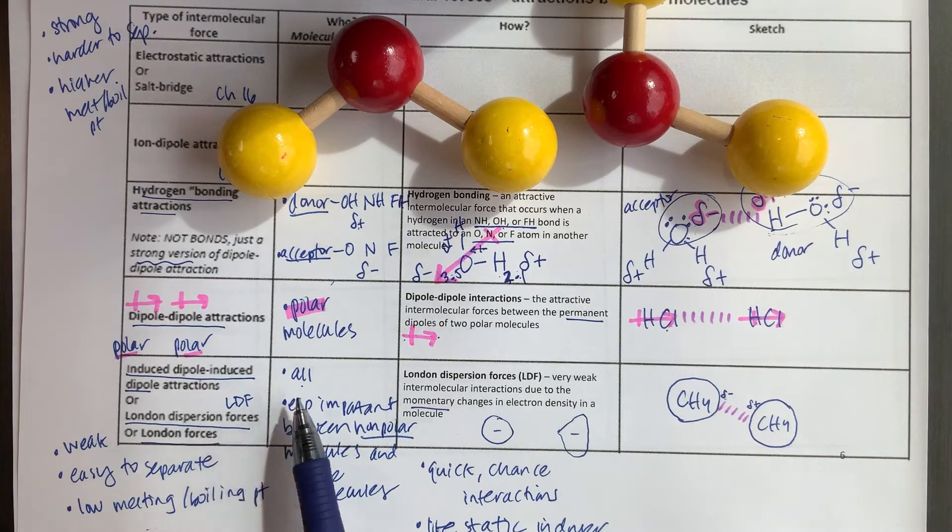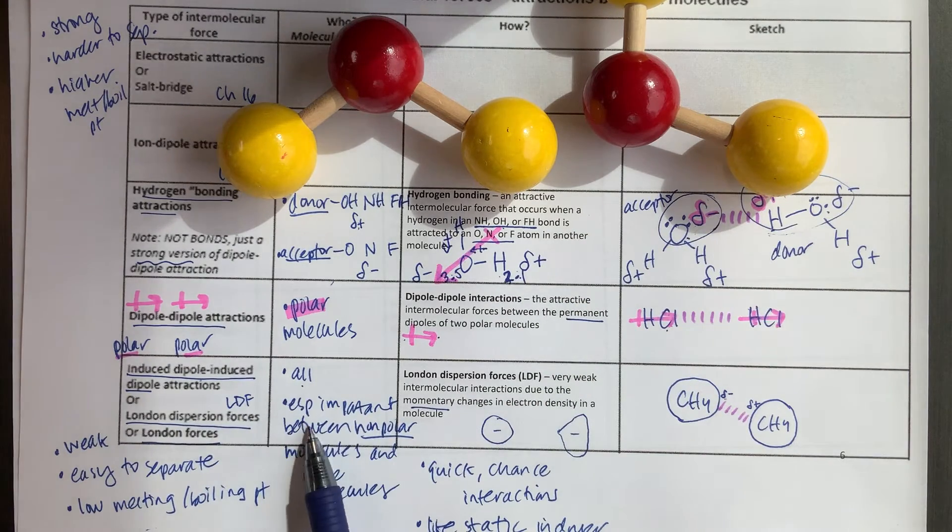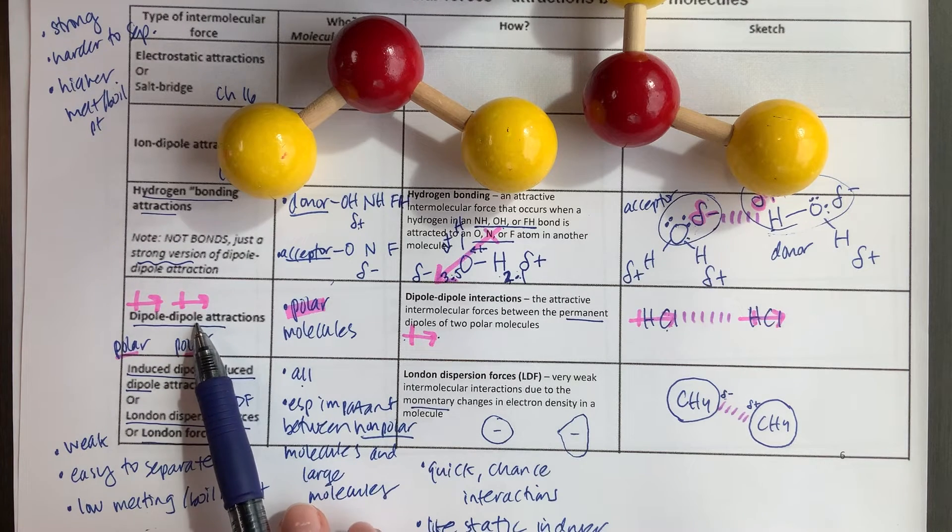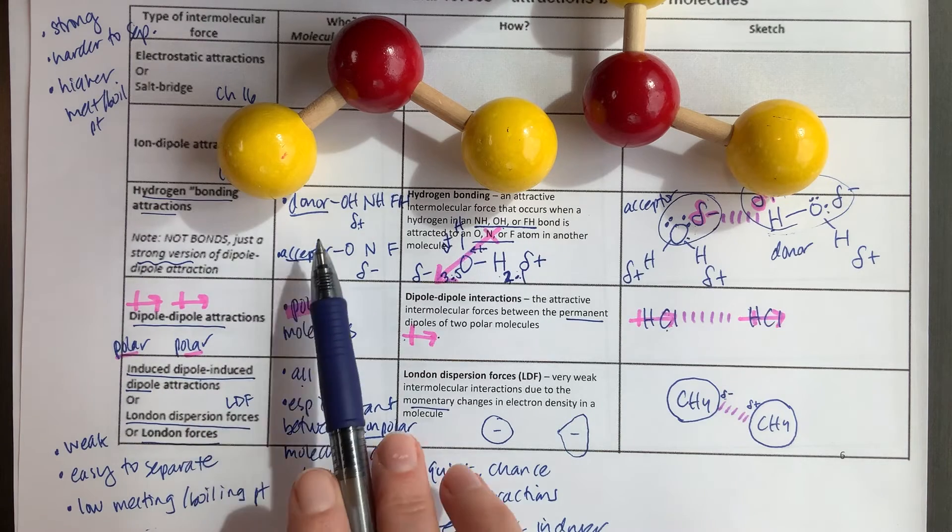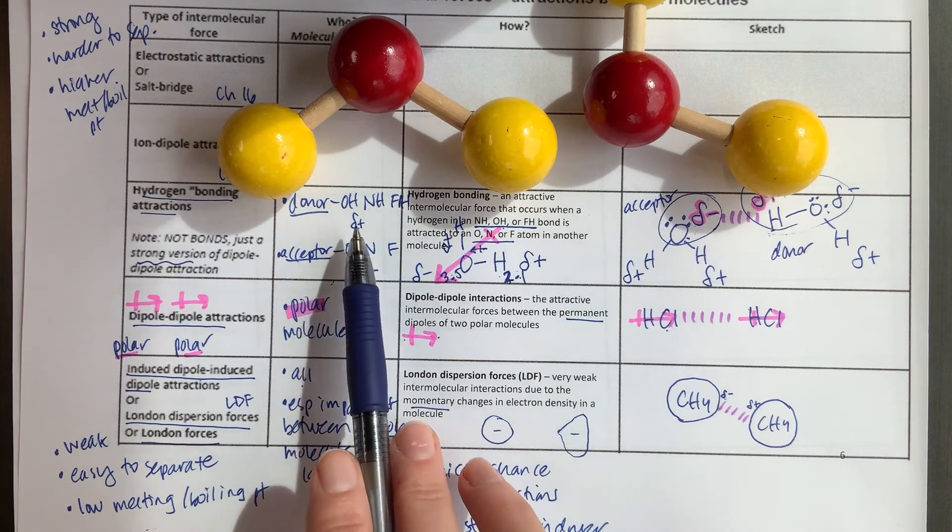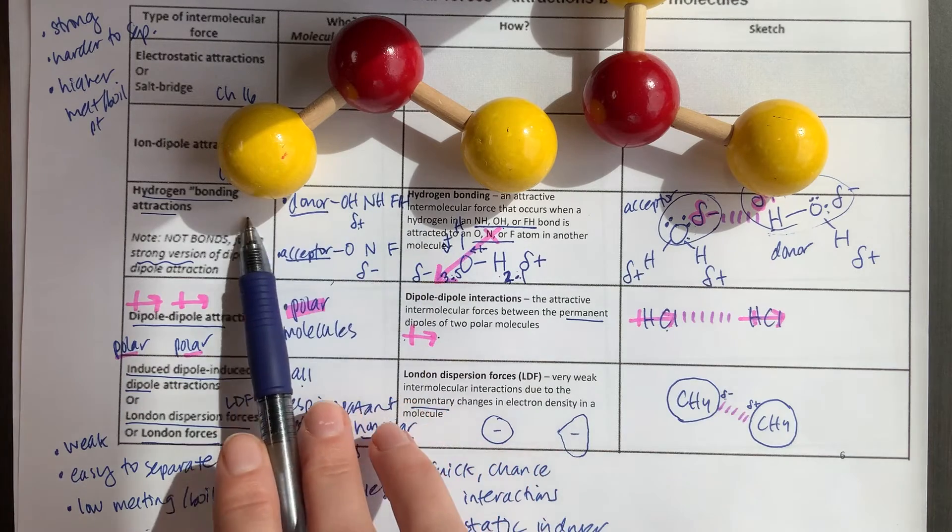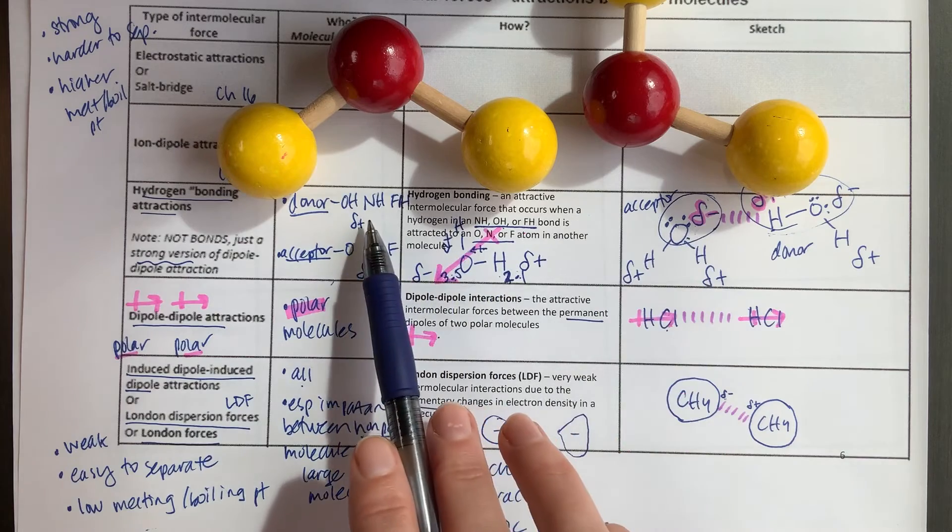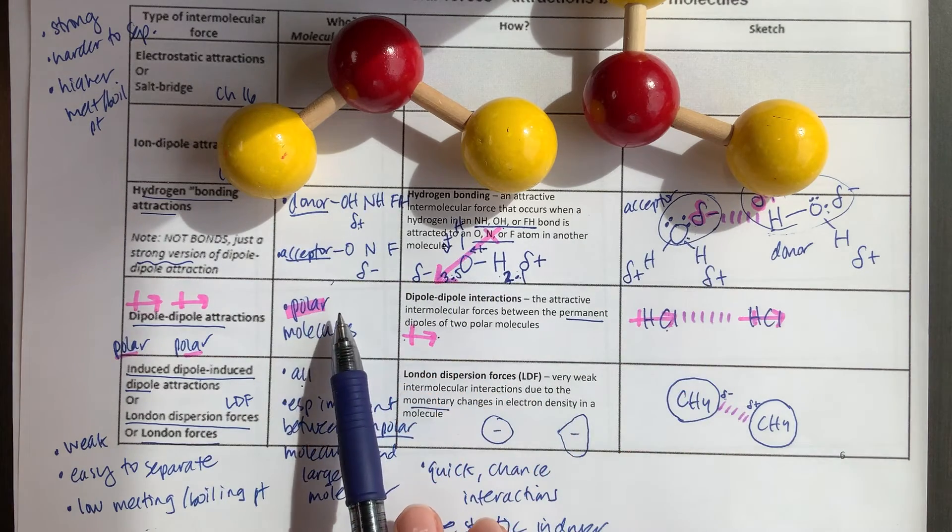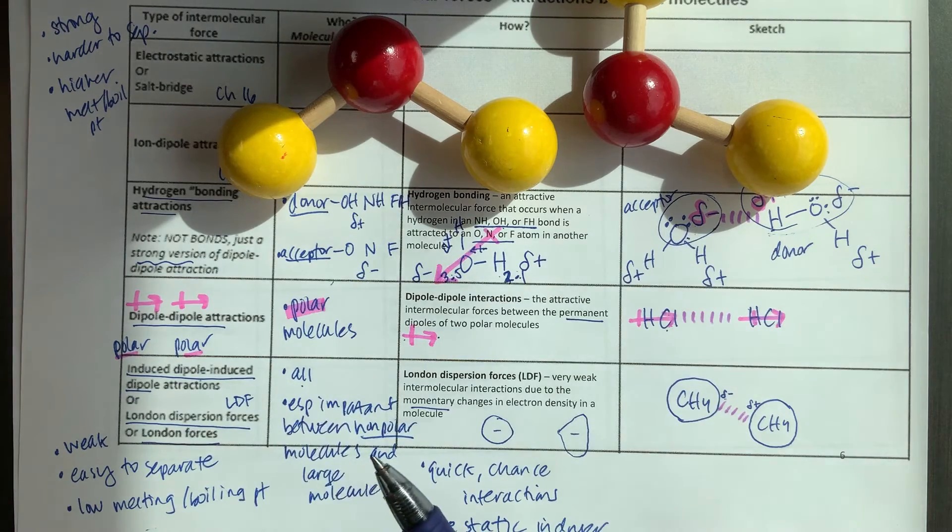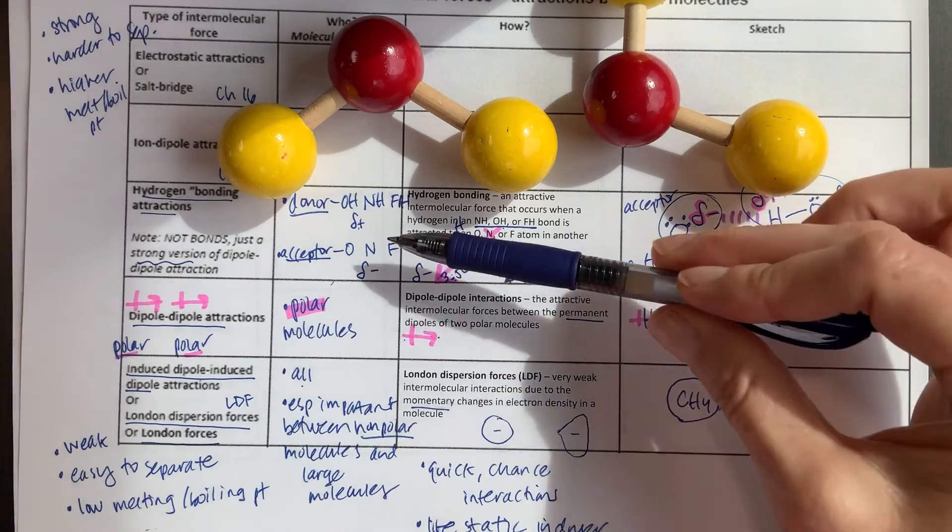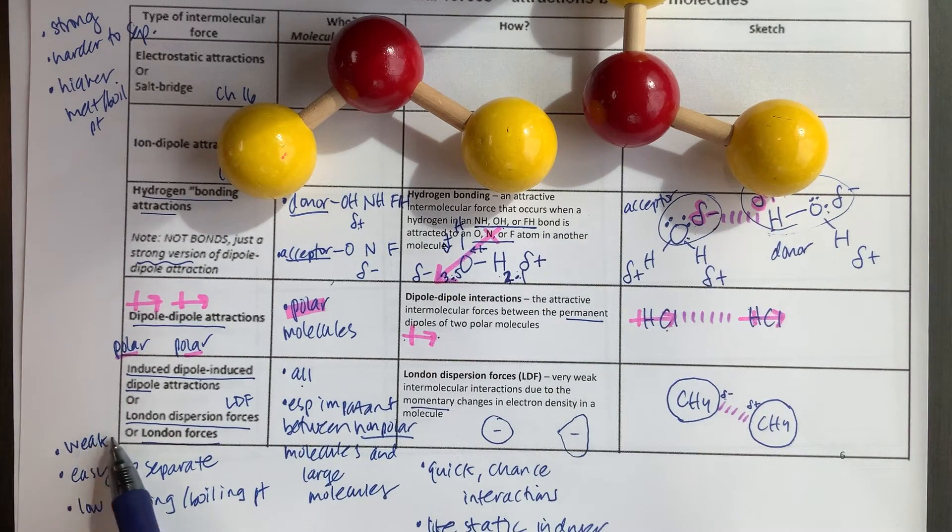These opposites here, we have our London dispersion forces that all molecules have. And then if you're a polar molecule, you also have dipole-dipole and London dispersion. And if you're a particular type of polar molecule that has an OH, NH, or FH in it, then you can do hydrogen bonding attractions, which are the strongest of these three. And we would say, if you can do that, you also are able to have dipole-dipole and London dispersion. But keep in mind that whatever is strongest is going to typically have the greatest impact on all of your physical properties, like melting points and boiling points.